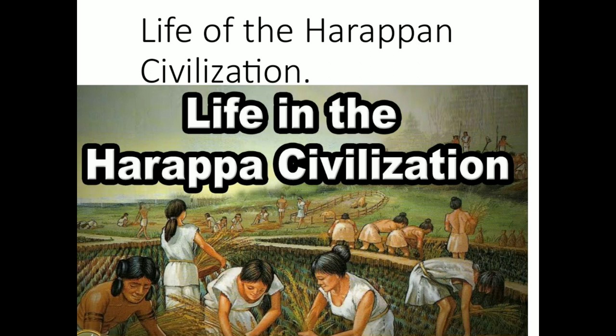Unit 3.5 — Life in the Harappan Civilization: The Harappan people practiced agriculture. Excavation at Kalibangan provides evidence of ploughed fields. People grew different types of crops, mainly wheat and barley in Rajasthan. Barley was grown on a large scale, while in Gujarat, ragi was grown. Peas, sesame, and lentils were also cultivated. Harappan people were also familiar with cotton.